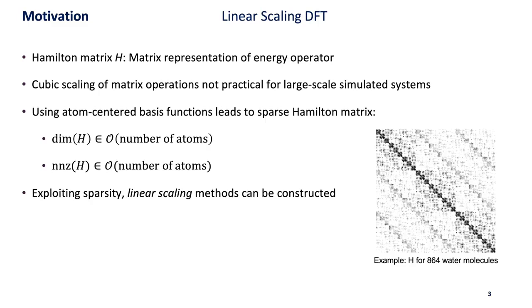But if we use atom-centered basis functions to represent the orbitals, we will see that this Hamilton matrix actually becomes sparse. While the dimension of the matrix still grows with the number of atoms, the number of non-zero elements only grows linearly with the number of atoms. By exploiting the sparsity, linear scaling methods for DFT can be constructed.